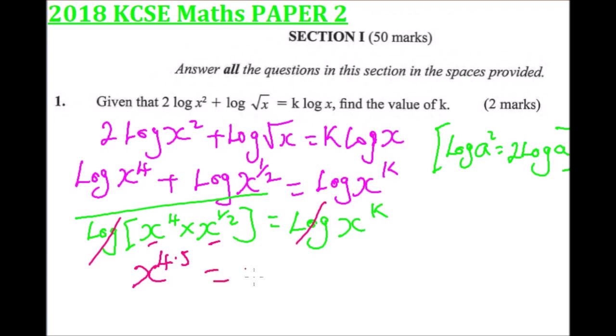It implies that k = 4.5, since the powers are the same. If you have x^4.5 = x^k, then k = 4.5.